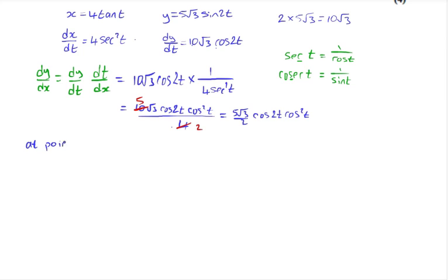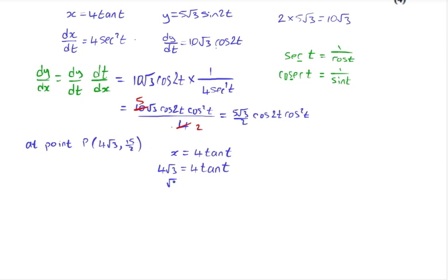At the point P, which is (4 root 3, 15 over 2), we are already given x equals 4 tan t. If we substitute the x value into this formula, we can rearrange to find t. We can divide both sides by 4 to get root 3 equals tan t. To get t, we take the arctan of root 3, which is 60 degrees or pi over 3 in radians. Now that we know the value of t, we can substitute this back into our dy/dx to find its value at point P.